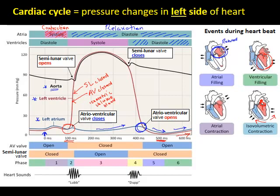If we looked at the right side of the heart we'd see a similar graph, but the pressure would be much lower. The right ventricle only needs enough pressure to pump blood through the pulmonary arteries to the lungs, which is a short distance. The left ventricle pressure must be very high because it has to drive blood around the entire systemic circulation, a much greater distance.